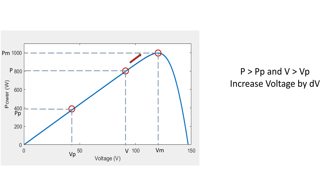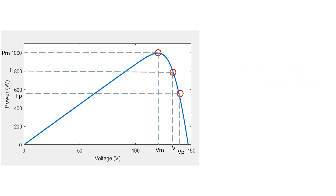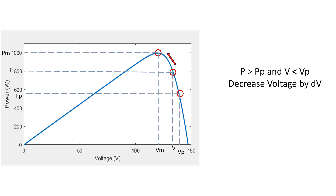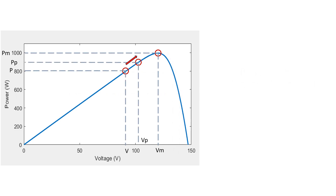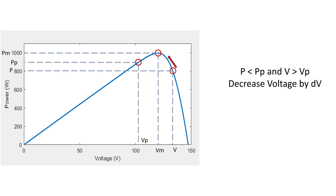If P is greater than Pp and V is greater than Vp, increase the operating voltage to reach Pm. If P is greater than Pp and V is less than Vp, decrease the operating voltage to reach Pm. If P is less than Pp and V is less than Vp, increase the operating voltage to reach Pm. If P is less than Pp and V is greater than Vp, decrease the operating voltage to reach Pm.